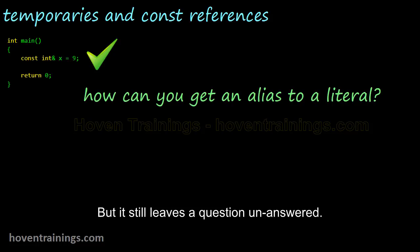But it still leaves a question unanswered. How is it possible to obtain an alias to a literal constant?